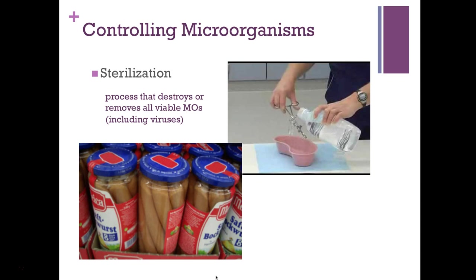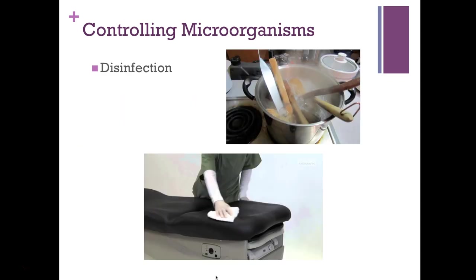The goal of sterilization is to get rid of bacterial endospores. As we know from previous chapters, endospores are the most resistant and difficult to kill — the most resistant to our attempts to control microorganisms whether using chemical agents or antibiotics. Here we use chemical agents to sterilize instruments.